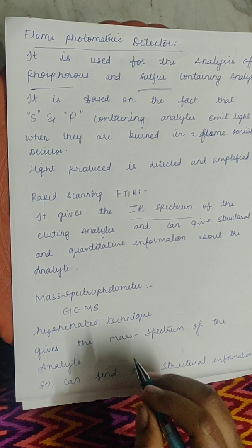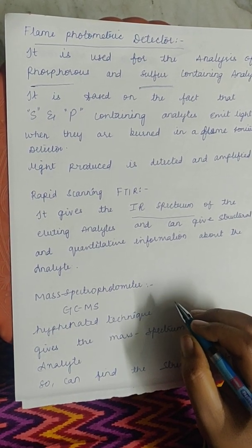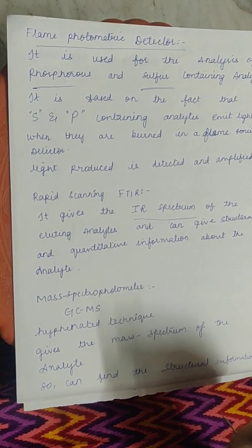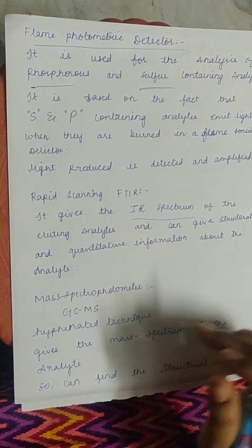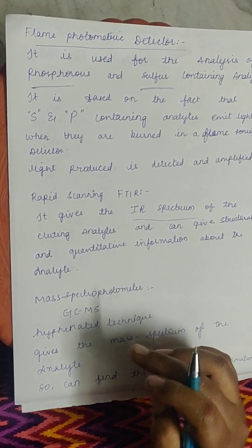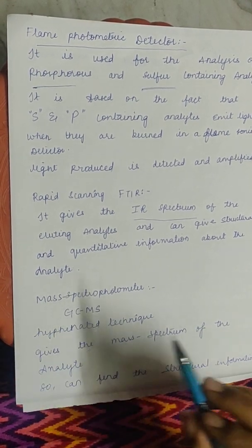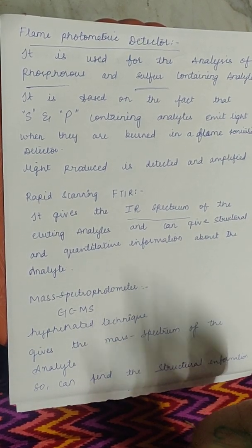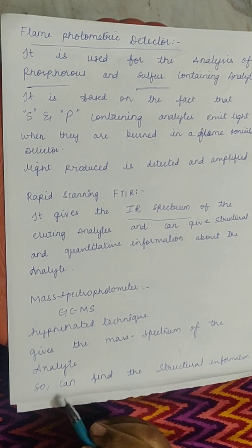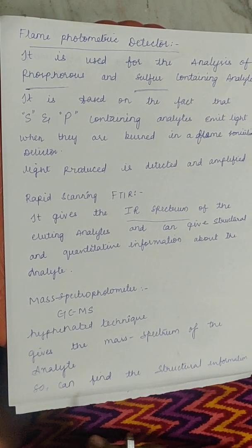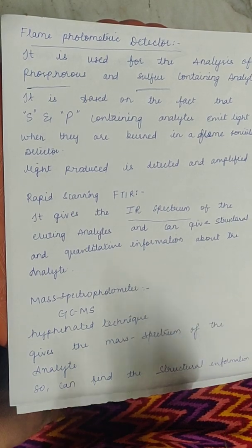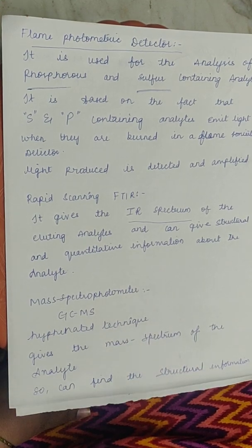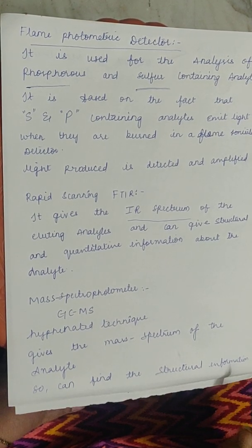The last detector is the mass spectrophotometer. Connecting GC to a mass spectrophotometer is a very advanced hyphenated technique — GC is connected with MS via an interface. GC-MS is a very advanced, conjugated technique that gives the mass spectrum of the analyte, providing a complete picture so we can determine structural information.